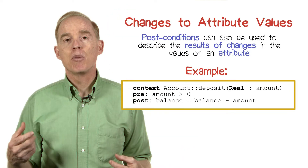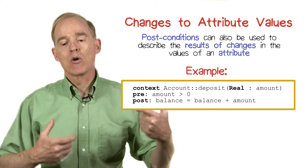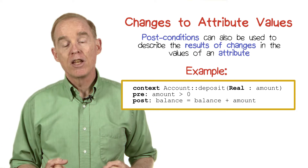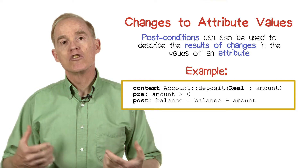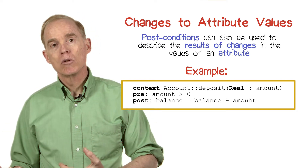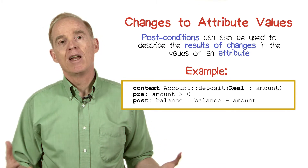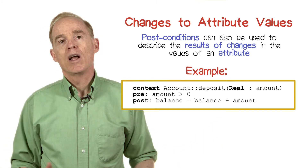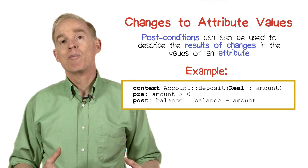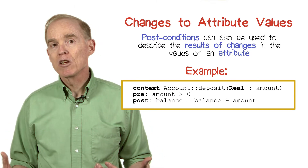Here's an example. If we have a deposit operation in the account class that takes a real argument, which is the amount being deposited, and as a sanity check we make sure that that amount is greater than zero — and that's the precondition.